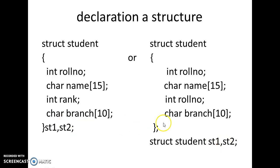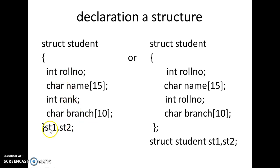Another way is to declare the structure separately and then declare variables st1 and st2 using 'struct student st1, st2'. Either of these two ways of declaring a structure is valid. We can create any number of students, and each student will have its own copy of roll number, name, branch, and rank.